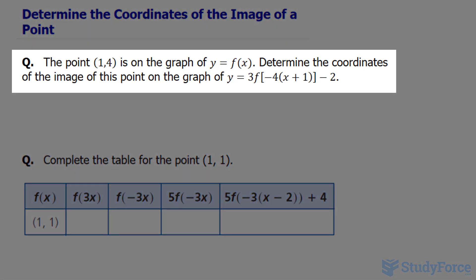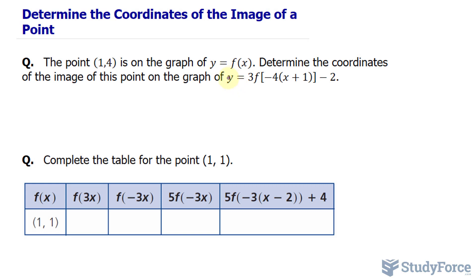The question reads: the point (1, 4) is on the graph of y = f(x). Determine the coordinates of the image of this point on the graph given the following.